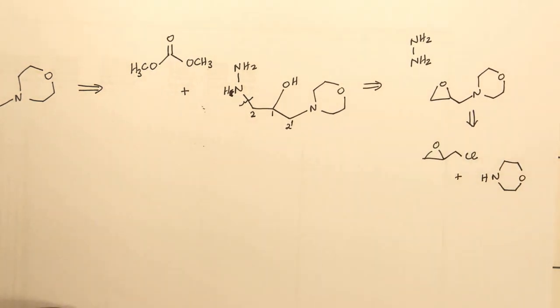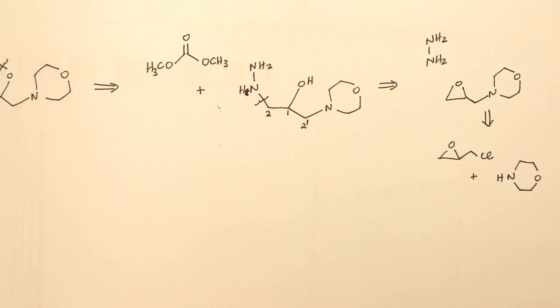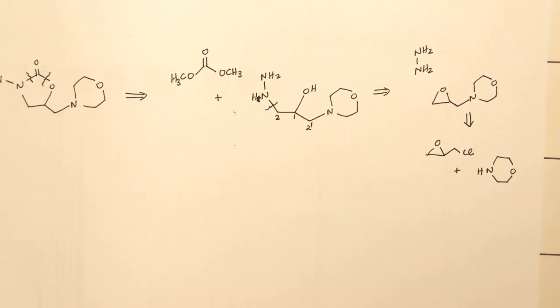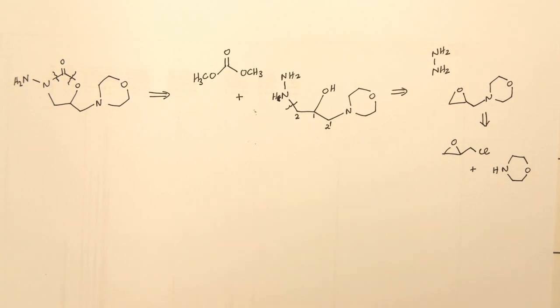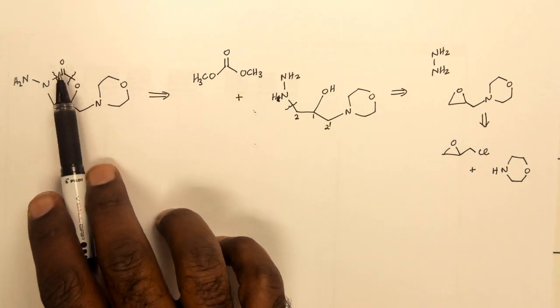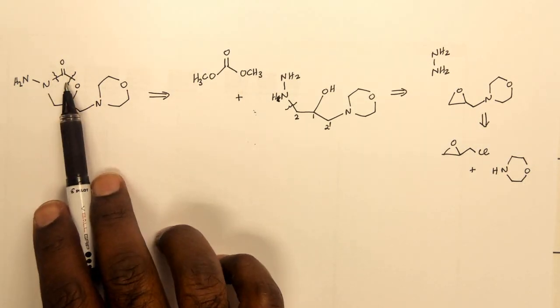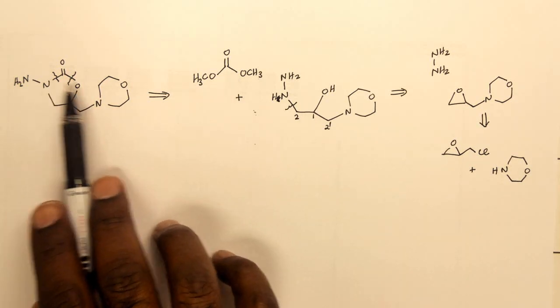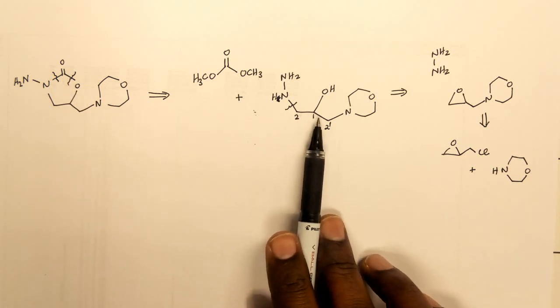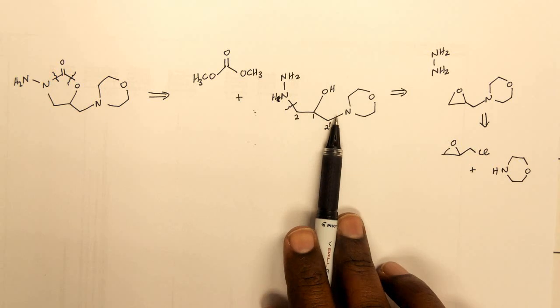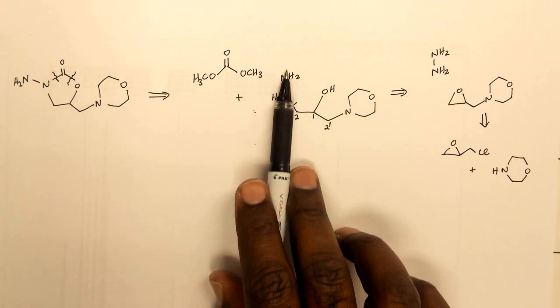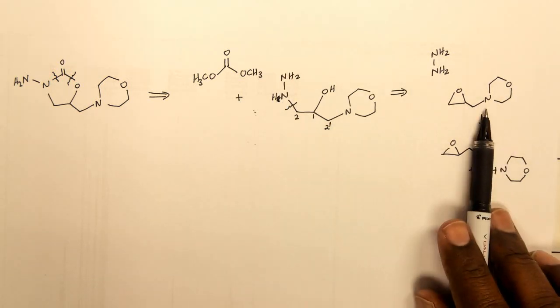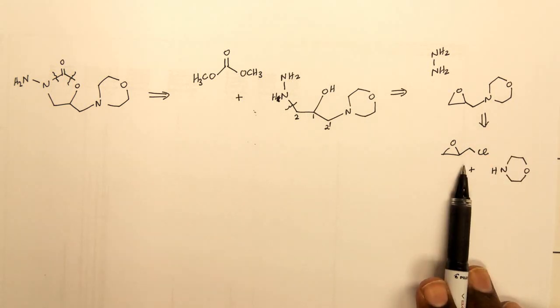That shows you a systematic disconnection of this particular structure. Disconnecting it firstly at the carbonate group. Recognizing that once we disconnected next to the two heteroatoms on the carbonate, we had a 1-2 disconnection that we could perform either on that side or that side. We chose that side because of the more reactive hydrazine. The resultant epoxide was able to proceed via epichlorohydrin.